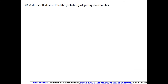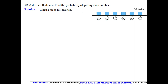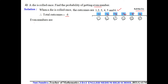Another question: a die is rolled once. Find the probability of getting an even number. When a die is rolled, the outcomes are 1, 2, 3, 4, 5, 6 — so there are 6 total outcomes. The even numbers among 1 to 6 are 2, 4, and 6 — there are 3 even numbers.